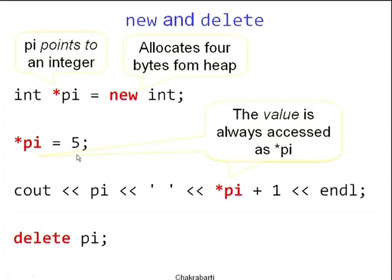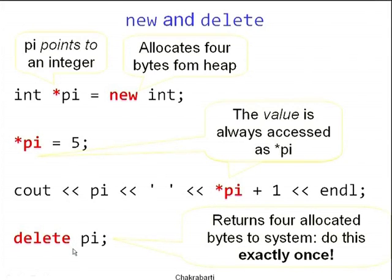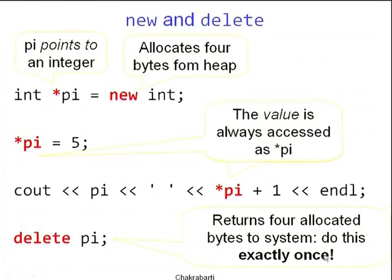You can say *pi = 5, or print pi as an address and print the value at pi+1. Finally, delete pi — delete is a C++ keyword, you say delete pi, not *pi. You are releasing the address, returning the 4 allocated bytes to the system. The all-important rule in memory management is: if you have allocated some space, you have to release it exactly once.